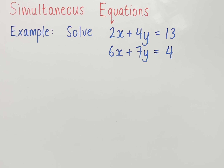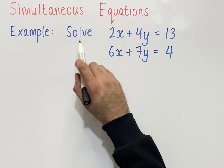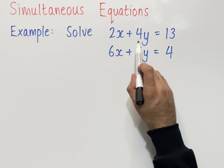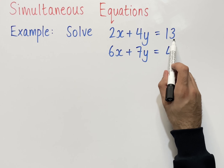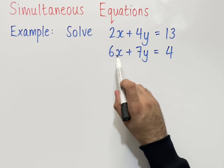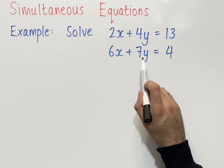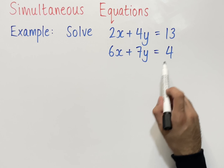Solving simultaneous equations using elimination involves cancelling one of the unknowns. In this example, the question says: solve 2x plus 4y equals 13, and 6x plus 7y equals 4.